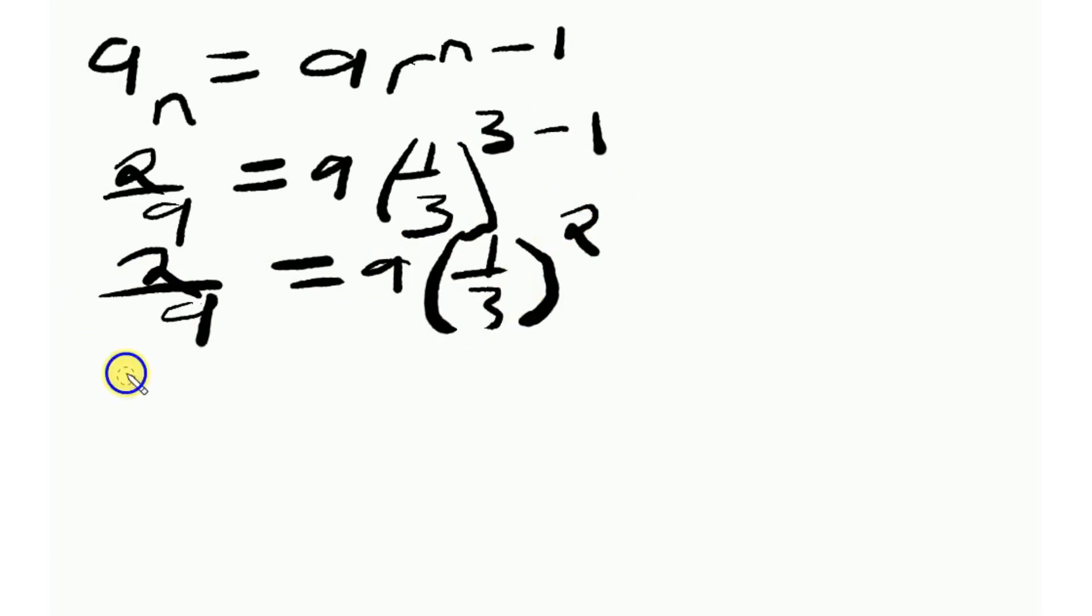So I'll say 2 over 9 equals 1 divided by 3 multiplied by 1 divided by 3, that's 1 divided by 9. So I'll have a times 1 over 9.